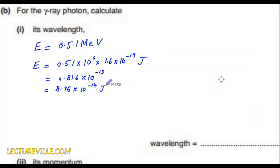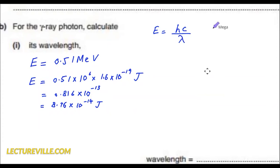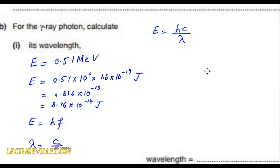So this is now the energy in joules. If you know the direct formula E equals hc over lambda, then you only need one formula to get the answer. But if you don't know this formula, we can do it in two steps: first find frequency using E equals hf, and then use lambda equals c over f. You will still get the same answer.